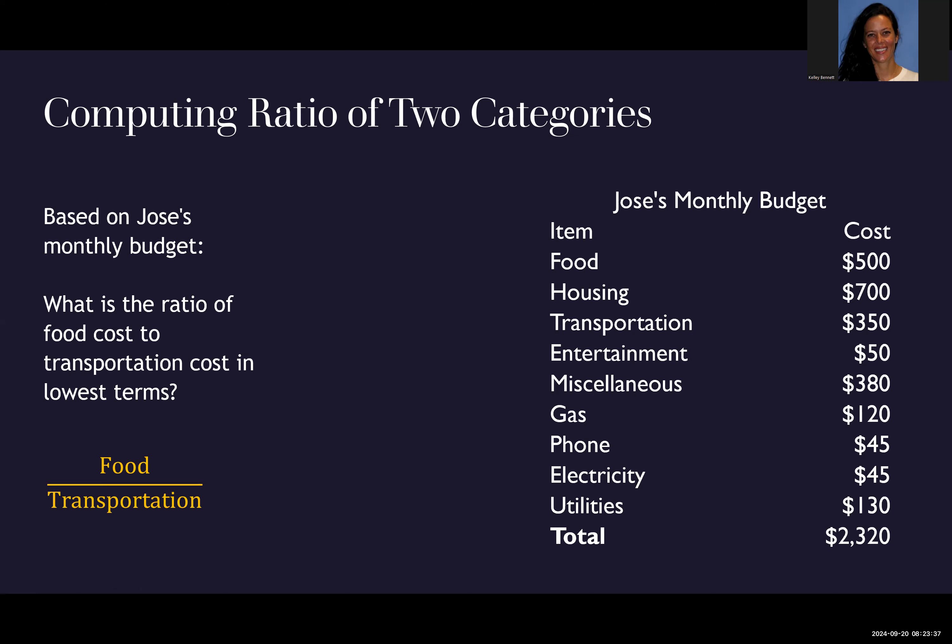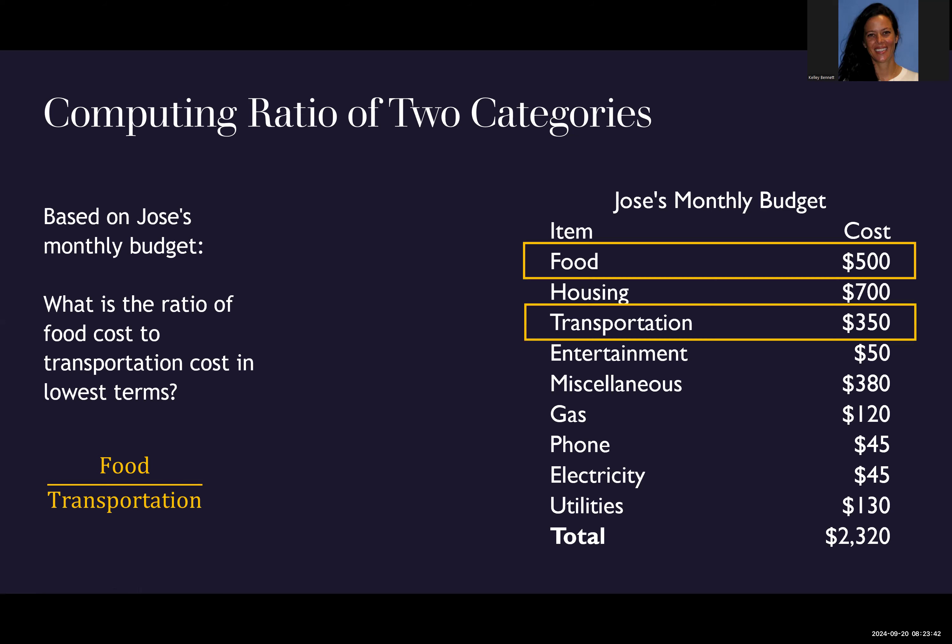Lowest terms means let's reduce that fraction. So food and transportation are here. We're going to create a ratio or a fraction from those two values, where food is on top and transportation is on the bottom.